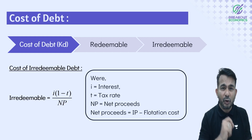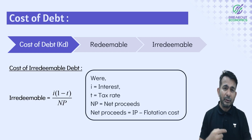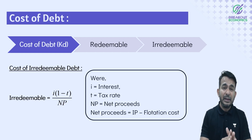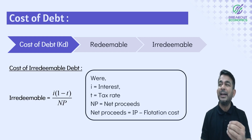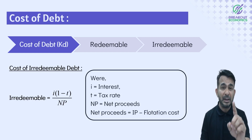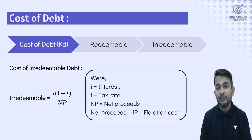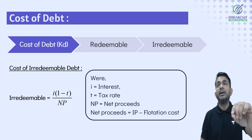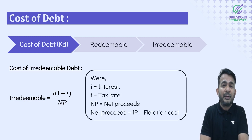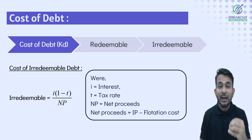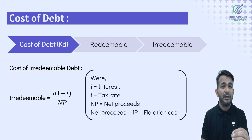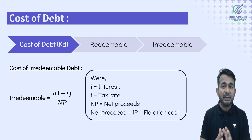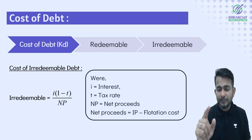For cost of debt, debt can be either redeemable or irredeemable. For irredeemable debt, you pay interest not on 98 but on 100. So the formula is: KD = I(1-T) / NP, where NP is net proceeds. That is the cost of irredeemable debt.